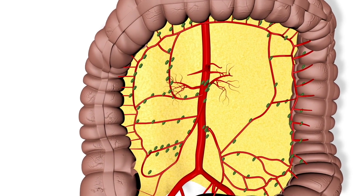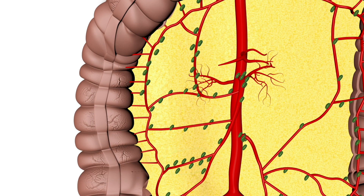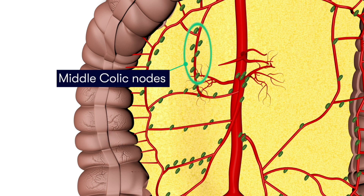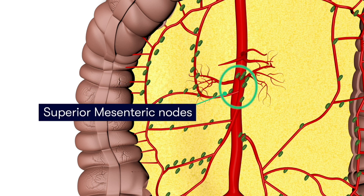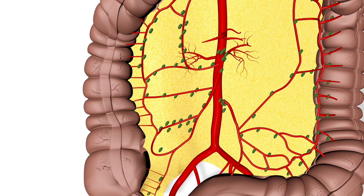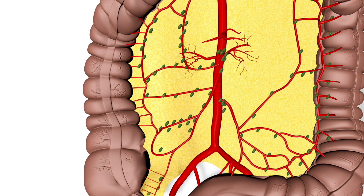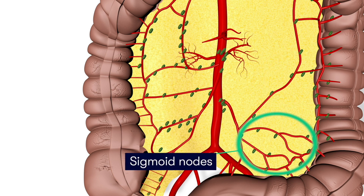Another important aspect which can determine the site of distant metastases is the lymphatic drainage of the large bowel. The proximal two-thirds of the colon drain into either the ileocolic, right colic, or the middle colic nodes, before then continuing to drain into the superior mesenteric nodes. The distal one-third of the colon and the upper rectum drain into the inferior mesenteric nodes via either the left colic or the sigmoid nodes, depending upon the anatomical location.